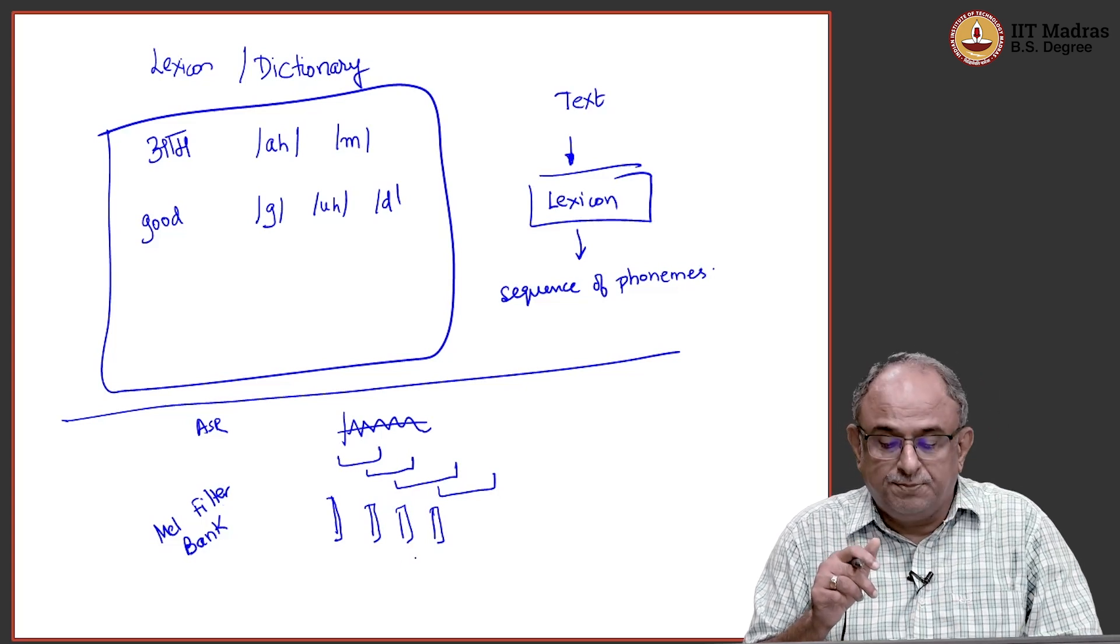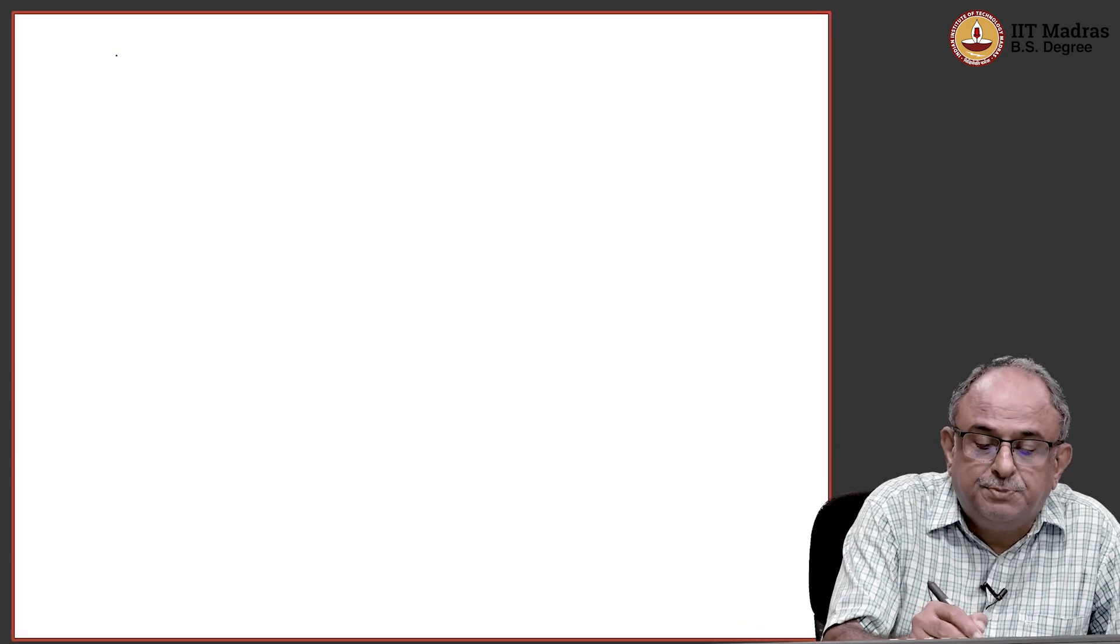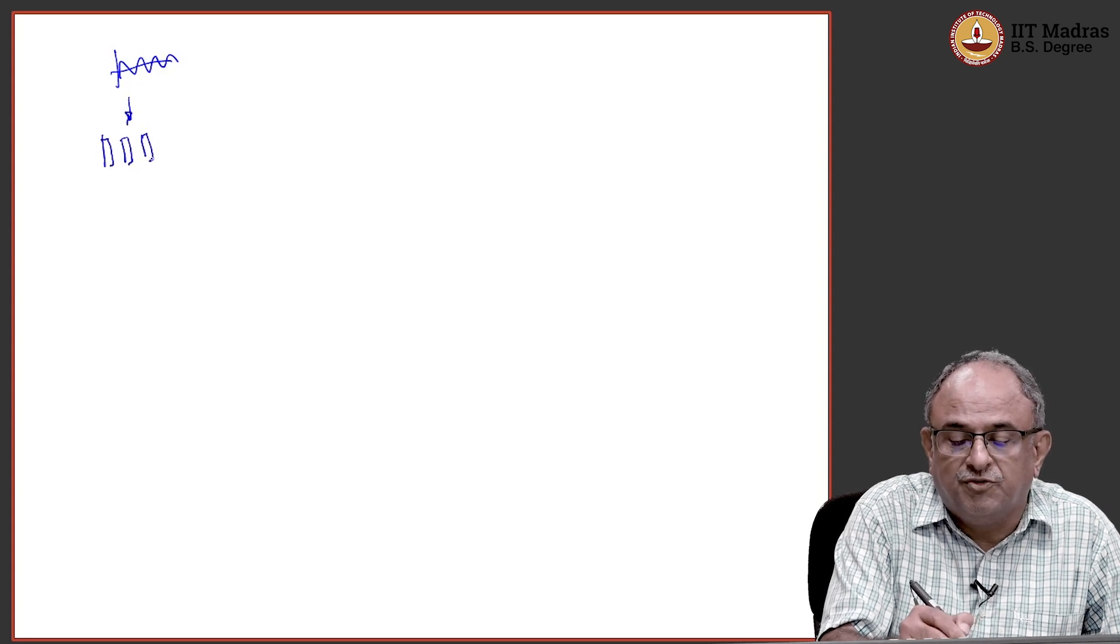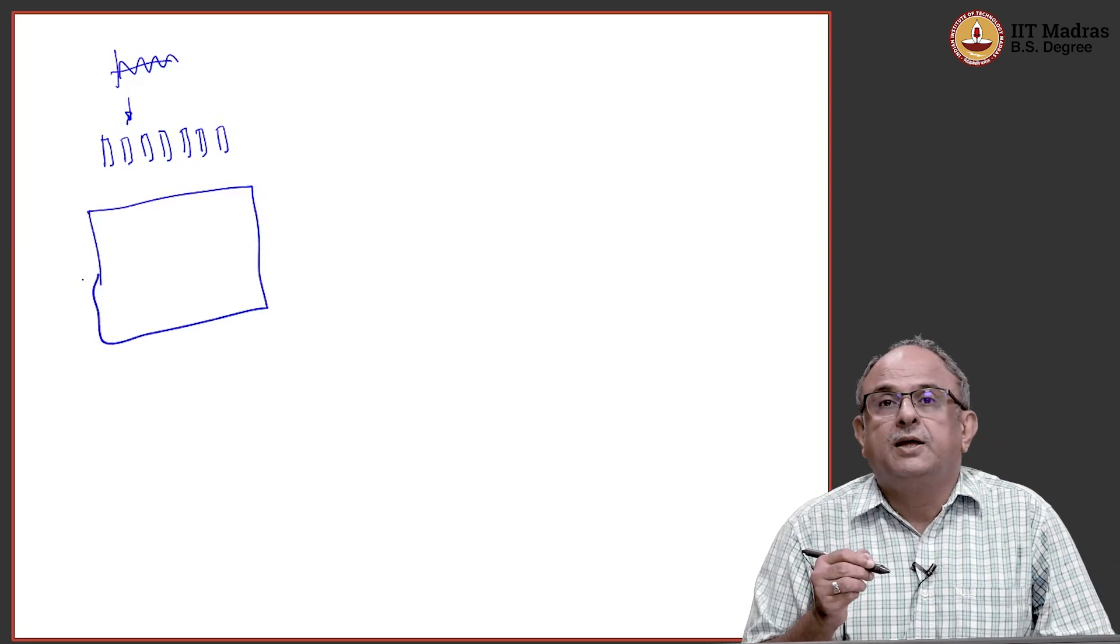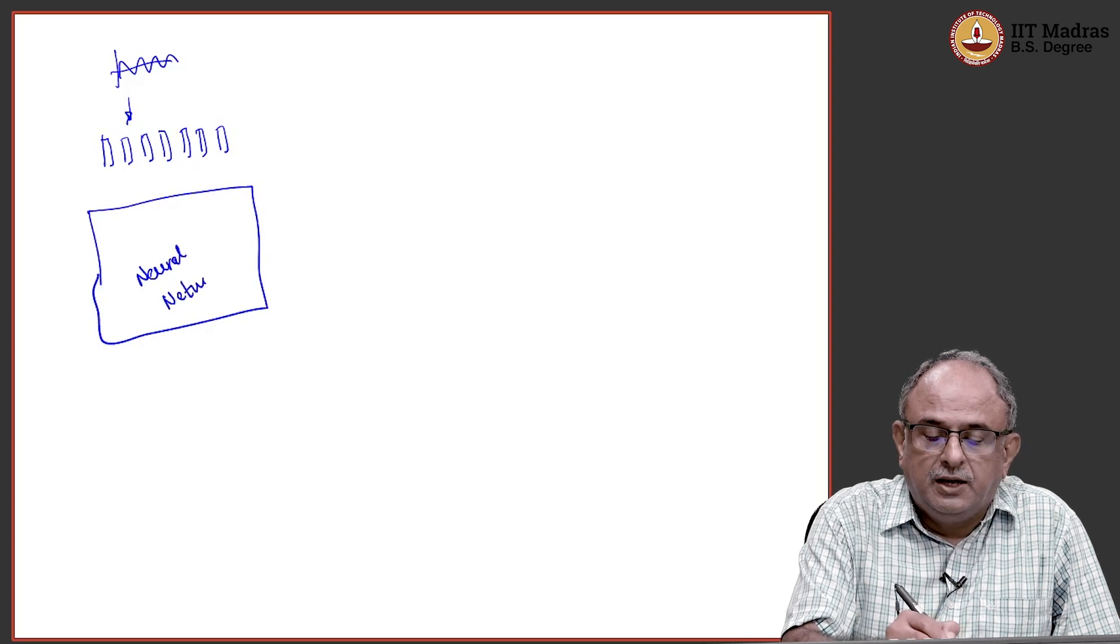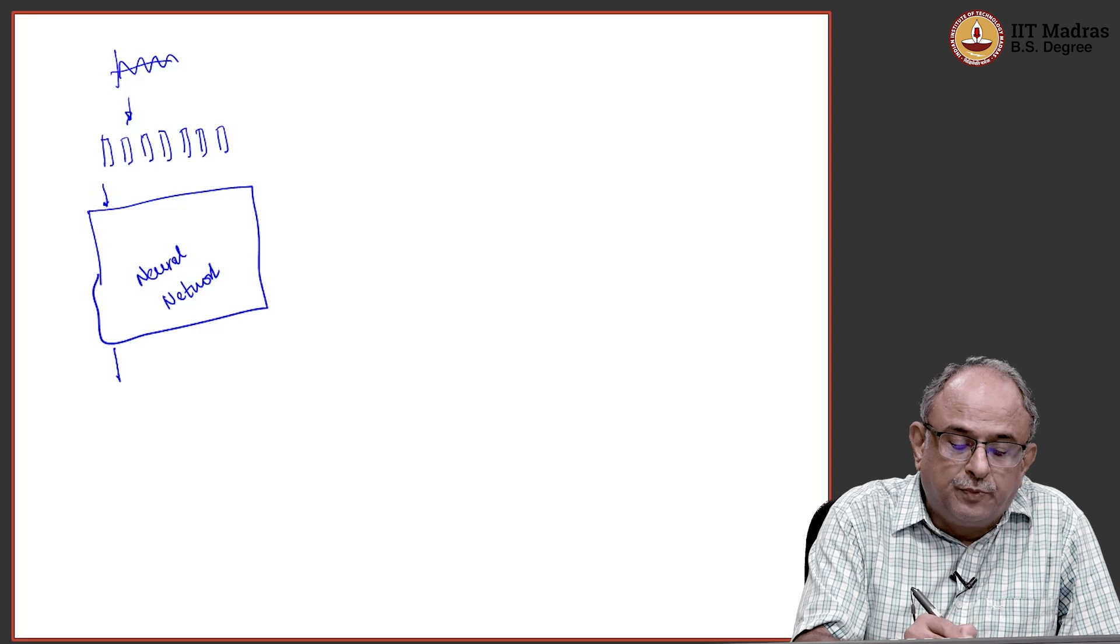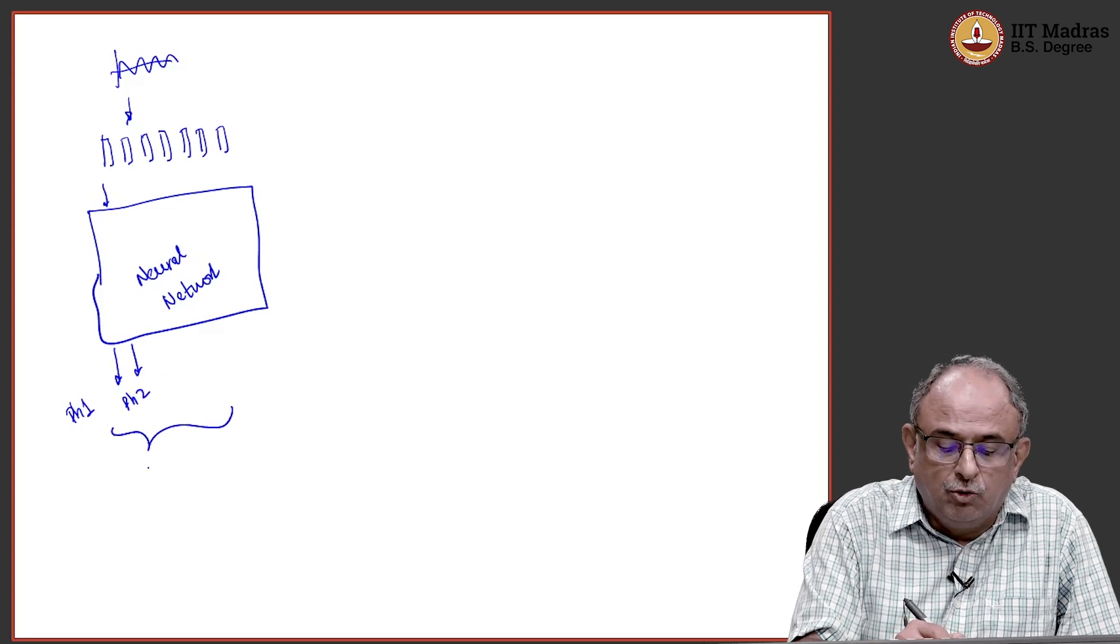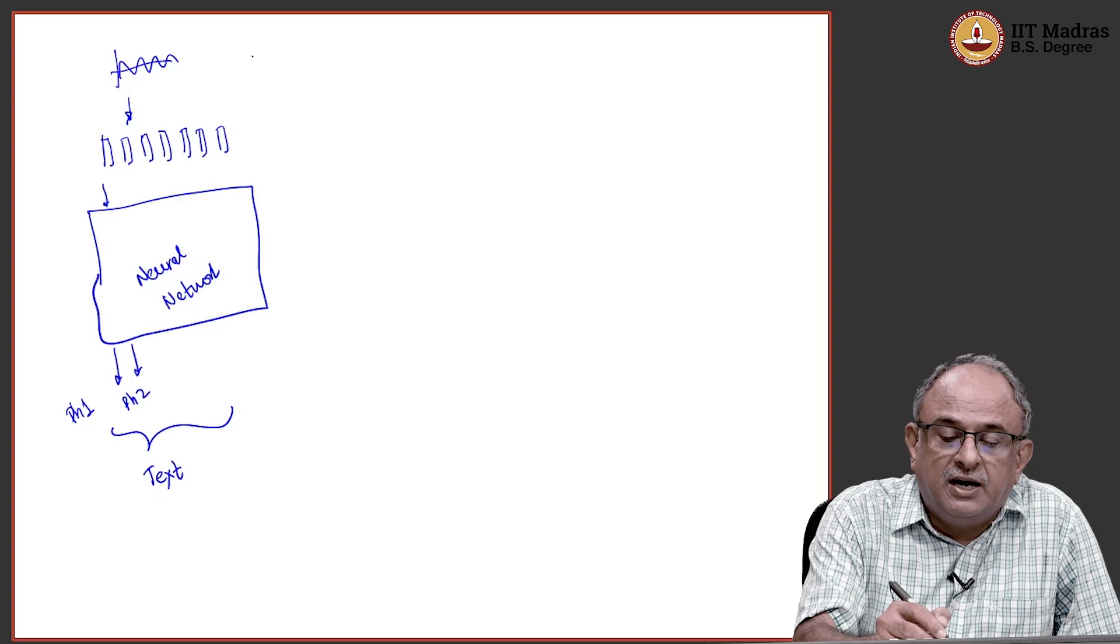If you remember, in the automatic speech recognition task, my task was to take this, and I will go to the next slide. So, I will start with the speech signal. I will convert this into a sequence of phonemes, sorry, sequence of MEL filter bank features. And then I will have a big kind of neural network. And I can go to phonemes, sometimes I will go, now this is like each one of these guys will try to predict some kind of phoneme, is it PH1, this is PH2 phonemes. From phonemes, I can go to text and therefore, I can do the ASR problem. So, this is the way we normally do in ASR problem.